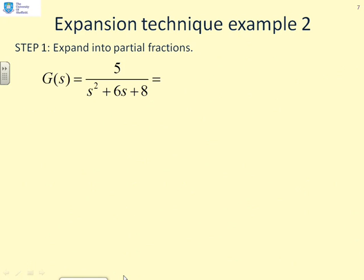Let's look at a separate example now. We've got G of s equals 5 over s squared plus 6s plus 8. So the first thing is to factorize this and write it in partial fractions forms. So we're going to have A over s plus 2 plus B over s plus 4. Hopefully it was obvious to you what the factors of this polynomial were.